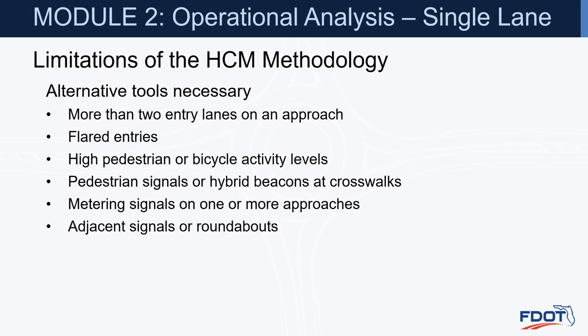We need to understand the limitations of the HCM model and when alternative tools may be needed: when more than two entry lanes are needed, for flared entries where a single lane flares to two lanes over a short distance, at locations with high pedestrian or bicycle activity, where a pedestrian signal or hybrid beacon at the crosswalk could impact operations, or where there is a metering signal on one or more approaches or an adjacent signal or roundabout.